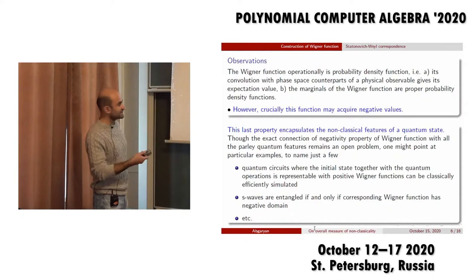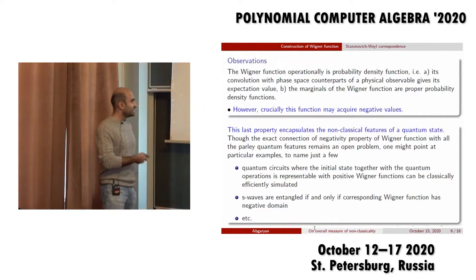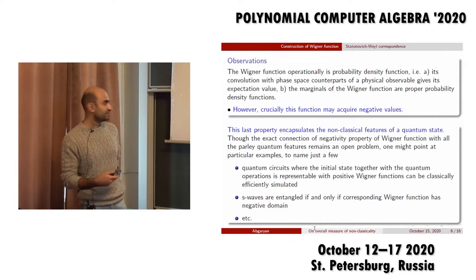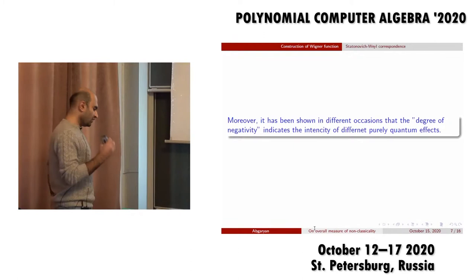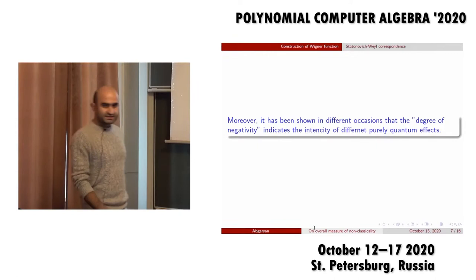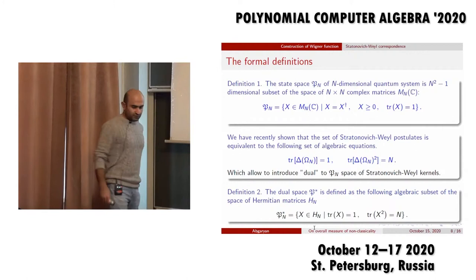Here are some examples. Quantum circuits where the initial state together with quantum operations is representable with positive Wigner functions can be classically efficiently simulated. Or S-waves are entangled if and only if the corresponding Wigner function has negative domains, and so on. Moreover, it has been shown on different occasions that the degree of negativity of the Wigner function, defined this or that way, indicates the intensity of some purely quantum effects. So let us move forward to the definition of non-classicality in these terms.